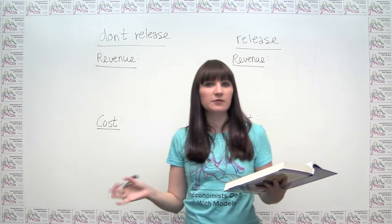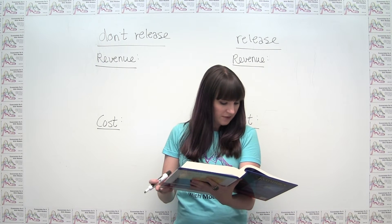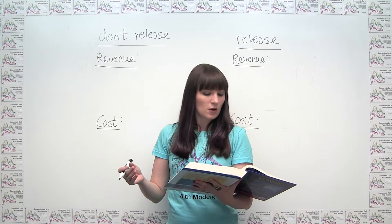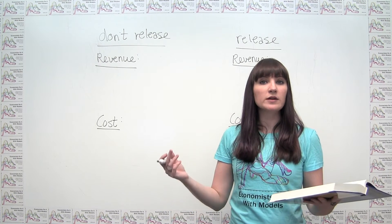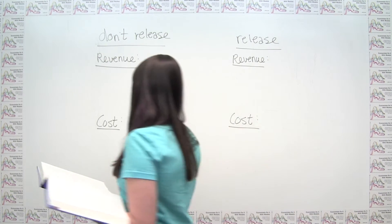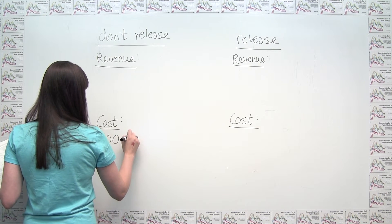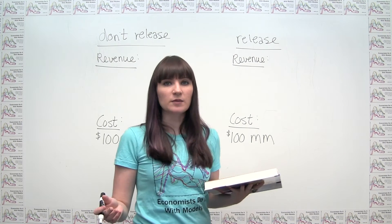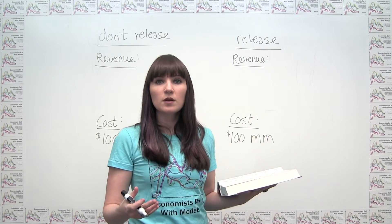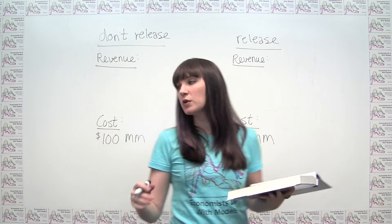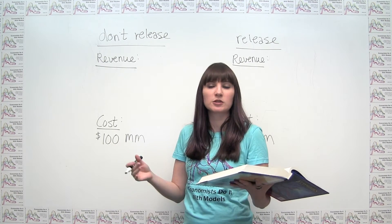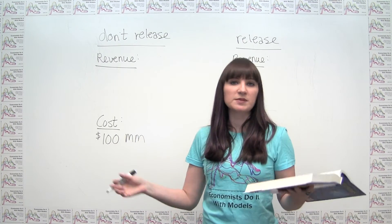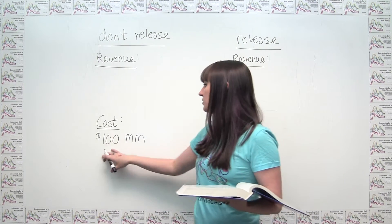The first piece of information says Down In Our Luck Studios has spent $100 million producing this film. What we notice is that this $100 million has already been spent regardless of whether the film is released. So I can put that $100 million in both columns. This is an example of a cost that economists would call sunk, or not recoverable. Because even if the studio chooses to not release the film — just put it in the trash bin — it's still incurred this cost. They don't get a refund on props, extras payments, actors payments, and so on, if they choose not to release the film.